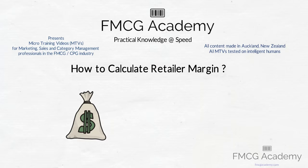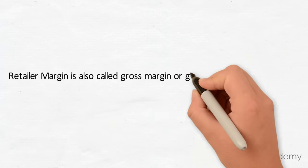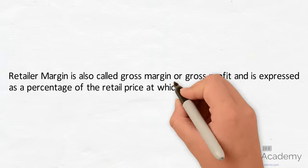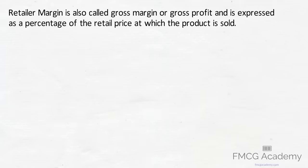How to calculate retailer margin. Retailer margin is also called gross margin or gross profit, and is expressed as a percentage of the retail price at which the product is sold.